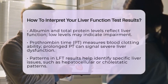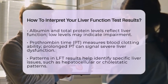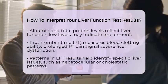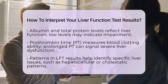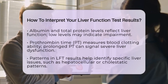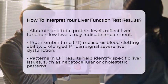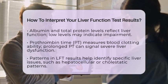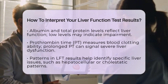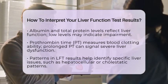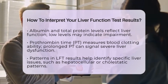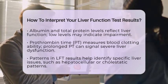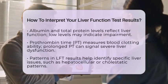A cholestatic pattern, characterized by elevated ALP and GGT, suggests bile flow obstruction. This could be due to gallstones or tumors affecting the bile ducts. A mixed pattern, where both transaminases and cholestatic enzymes are elevated, may indicate a combination of liver injury and bile duct involvement.